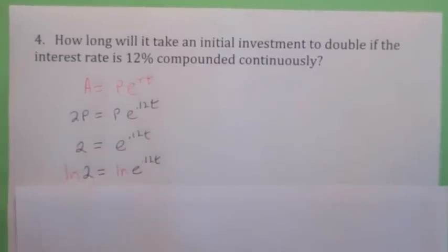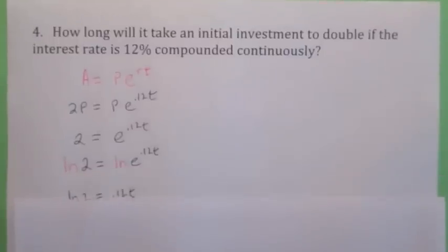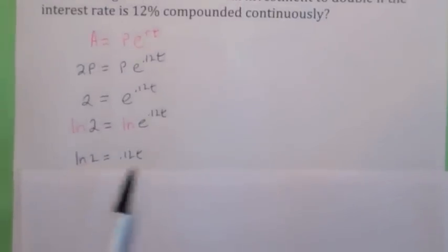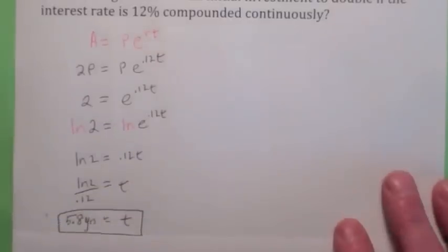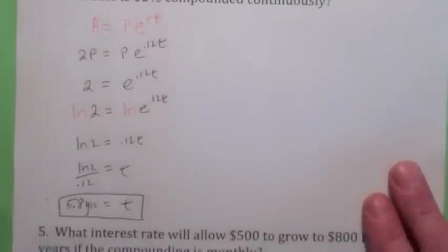Then when you take the natural log of both sides, you get this. Bring down the exponent. I shouldn't say bring down the exponent. I should say the right side just becomes 0.12t. Now divide by 0.12 and your final answer should be 5.8 years. Okay, why don't you, well, let's try one more here.